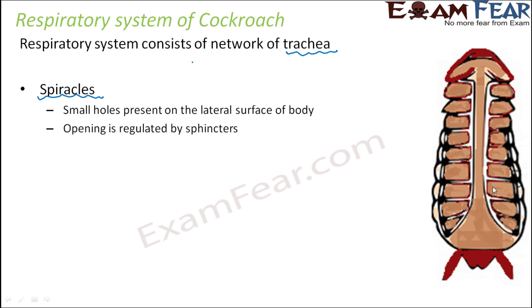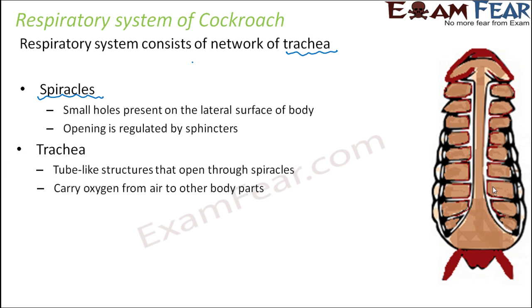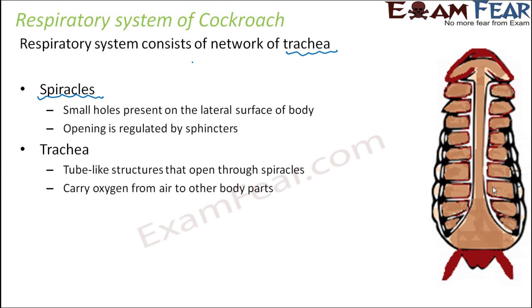There are small holes present on the side surface of the body. The opening of these holes is regulated by muscular sphincters. When the sphincters open, the holes will be open so that exchange of gases can take place. When the sphincters close, no exchange takes place. These trachea are tube-like structures that open through spiracles and carry oxygen from air to other body parts.